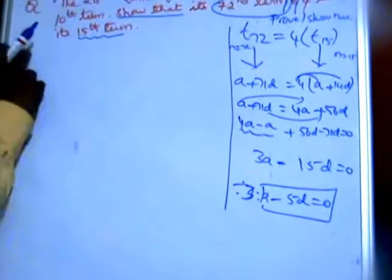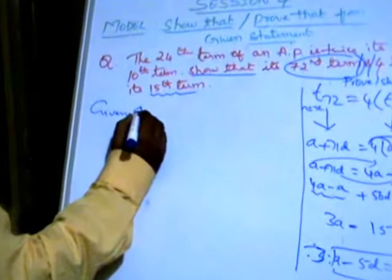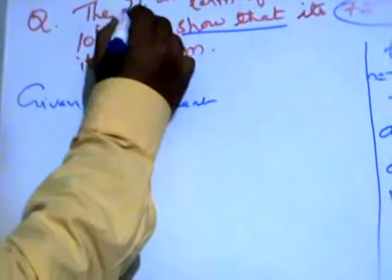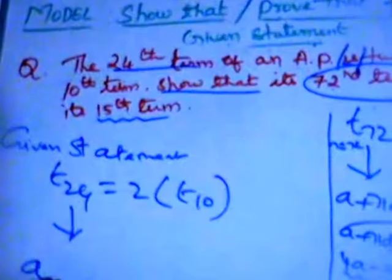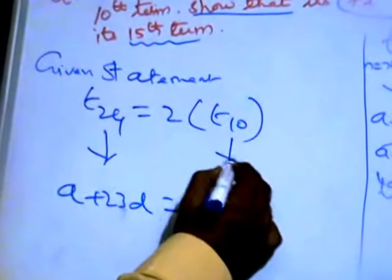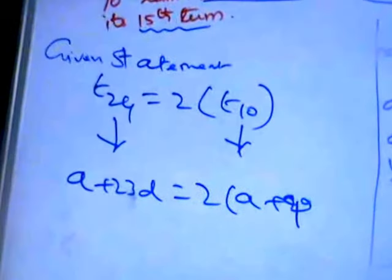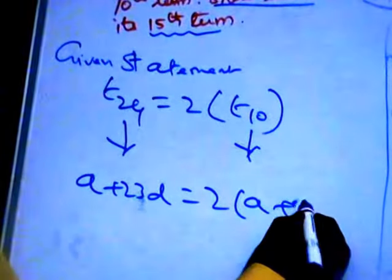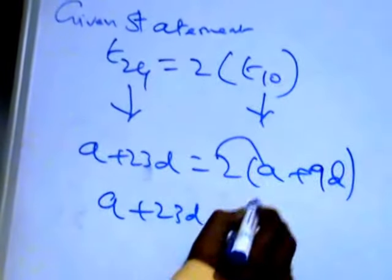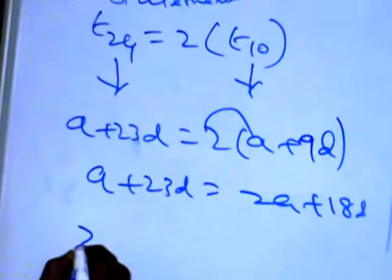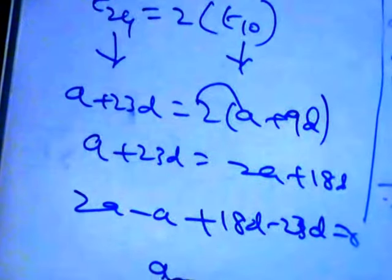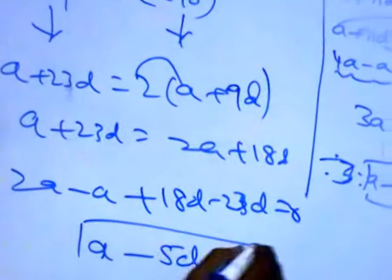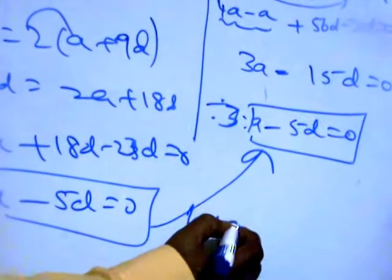Now go to the given statement. The given statement is: the 24th term T24 equals twice the 10th term, 2 × T10. So a plus 23d equals 2 into (a + 9d), giving 2a plus 18d. Take all to one side: 2a minus a, plus 18d minus 23d, equals 0 — that is a minus 5d equals 0. That is what we have proved — hence proved.